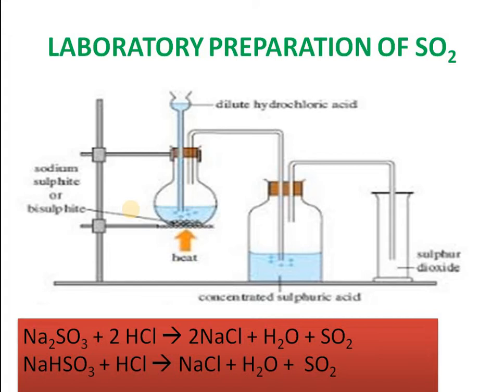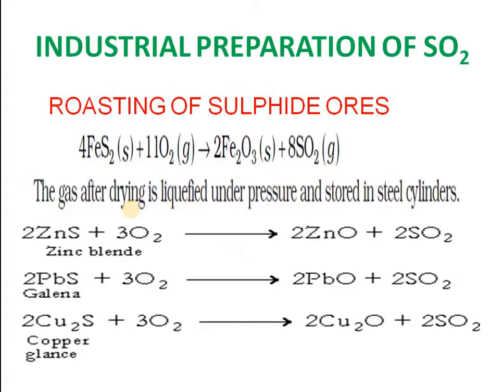The reactions you can see here: sodium sulfite plus hydrochloric acid gives sodium chloride, water, and sulfur dioxide. Similarly, sodium bisulfite is also used for preparing sulfur dioxide in the laboratory.